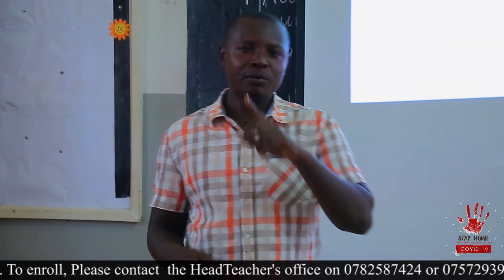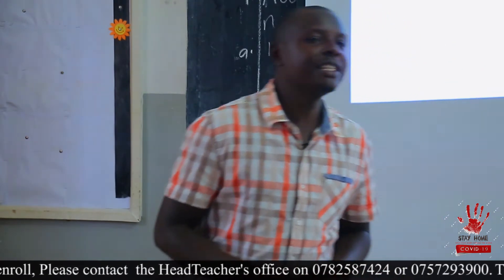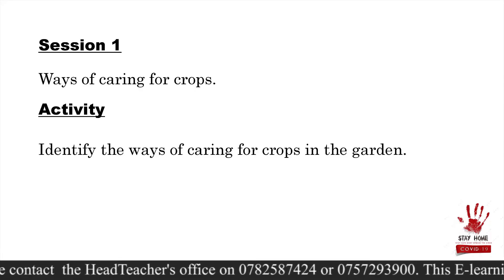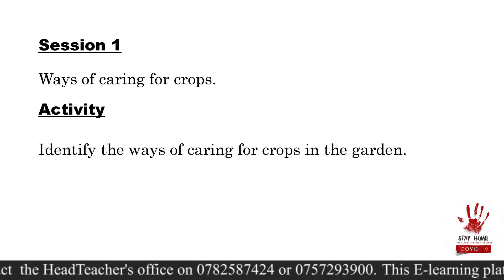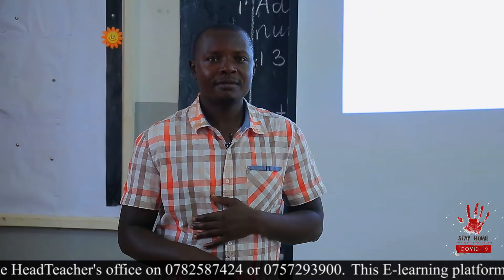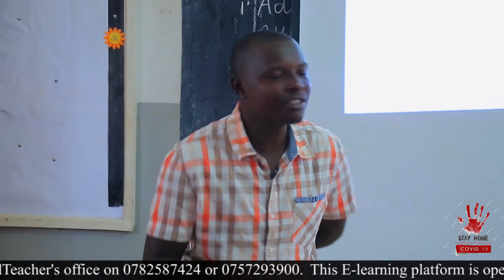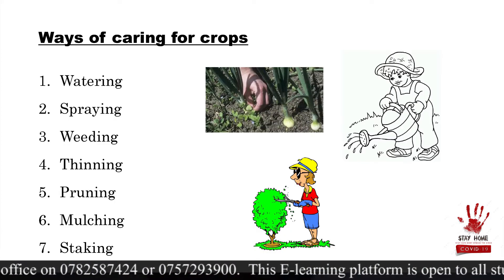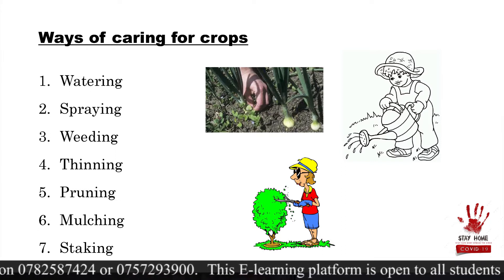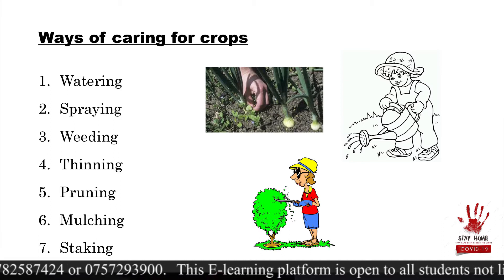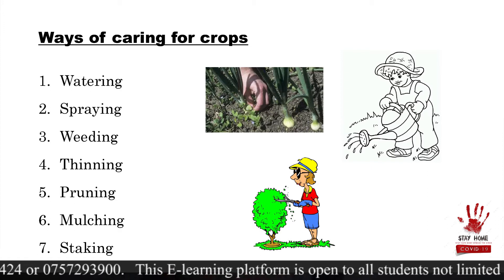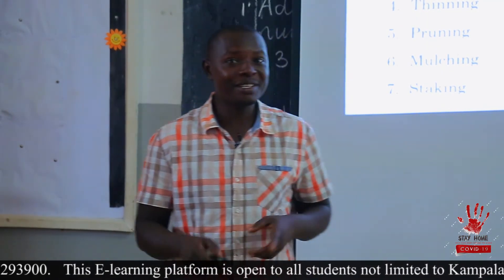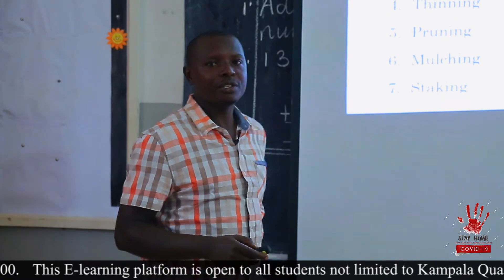Can you discuss with your friend, or your brother, or your cousin sitting there? I know you are very many in the room, but ask one of them: how do we care for crops? Try to discuss how we care for crops. That's good. Check your answers with mine. One of the ways is by watering, spraying, weeding, thinning, pruning, mulching, staking, hardening off, and many more. So try to check your answers with mine, because I told you to ask someone there how we care for crops in the garden. These are the ways.